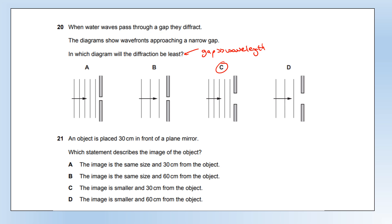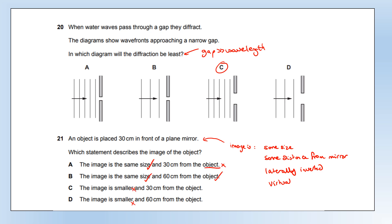An object is placed 30 centimetres in front of a plane mirror. Which statement describes the image? Mirror images are the same size as the object, the same distance from the mirror as the object, laterally inverted, and virtual. The image is the same size — correct. It says 30 cm from the object — no, it will be 30 cm from the mirror, making it 60 cm from the object. If the object is 30 cm from the mirror and the image is 30 cm from the mirror, the total distance between them is 60 cm. So the answer is option B.